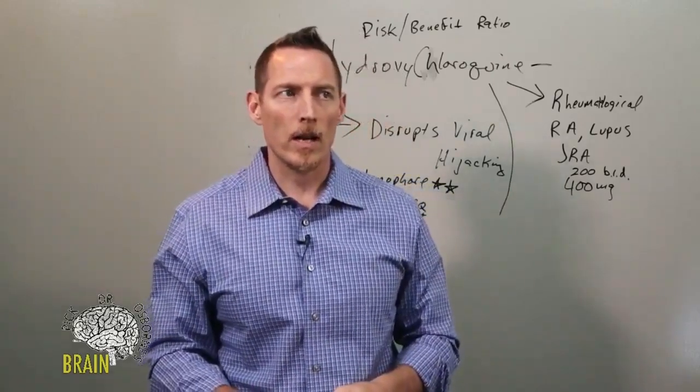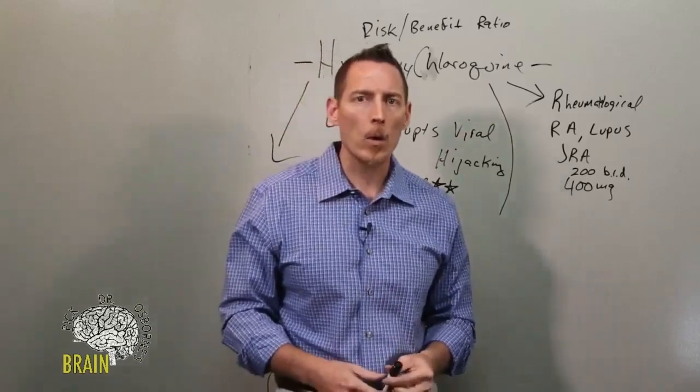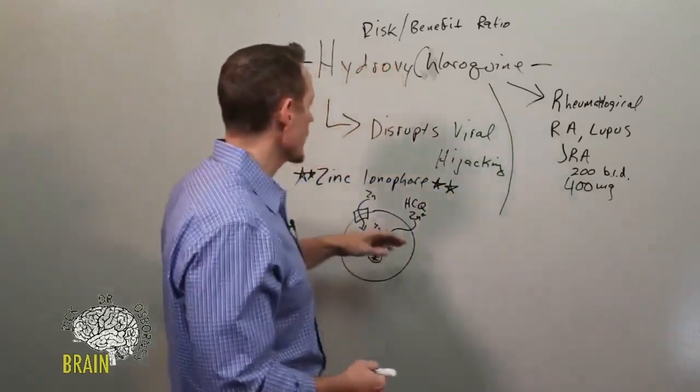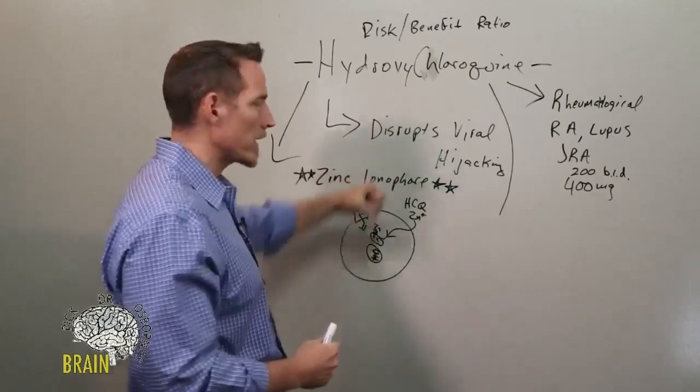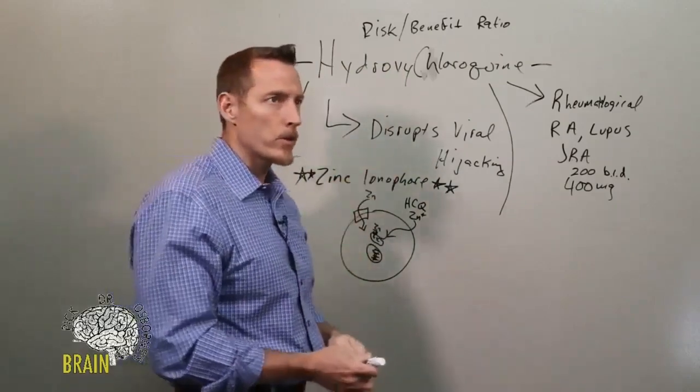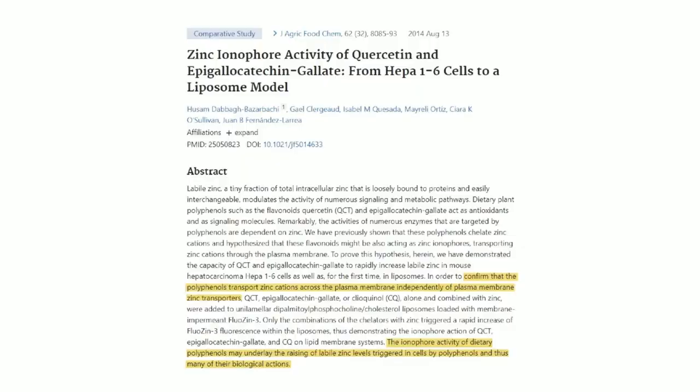I said that an ionophore is something that binds or chelates to zinc and helps it get into the cell. This research study you can see here confirms that polyphenols transport zinc across the plasma membrane independently of plasma membrane zinc transporters.